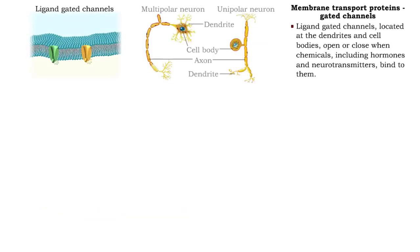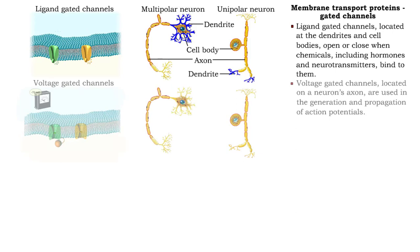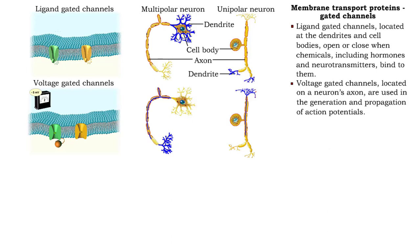Chemicals, like hormones and neurotransmitters, bind to ligand-gated channels to open or close them. These channels are typically located at the dendrites and cell bodies. Voltage-gated channels are used in the generation and propagation of action potentials, and are located on the axons of neurons.